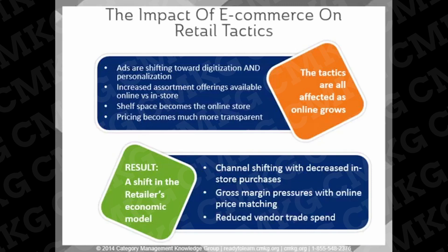Gross margins will come under pressure from price transparency. Retailers will need to have the same pricing in-store as online to remain competitive. There will be a reduced share of trade spending from vendors — as there is an increased focus in the digital arena, vendors will allocate fewer trade dollars to secure shelf space and run in-store promotions. Both retailers and vendors need to become more strategic in their online approach and continue to evolve their strategy as they better understand the omni-channel consumer.